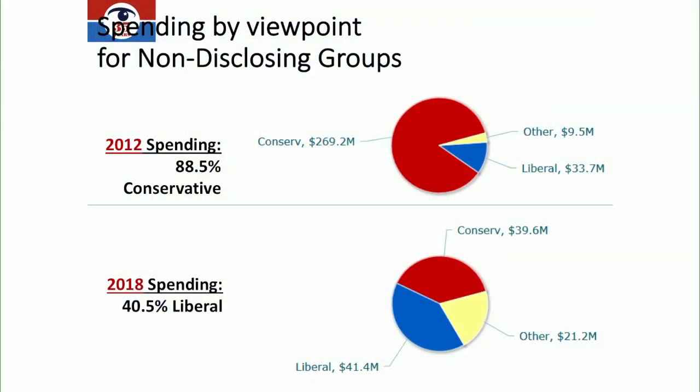In terms of spending by viewpoint, from 2010 through 2016 it was 70 to 90 percent conservative organizations raising and spending this outside money. In 2018, liberal groups flipped it and became the top dark money spenders. Majority Forward — a group connected to current and former Democratic Senate leaders — was the number-one dark money spender, spending about $46 million on its own. We also started a new project tracking the race and gender of federal candidates for 2018 and are now compiling that research for 2020.